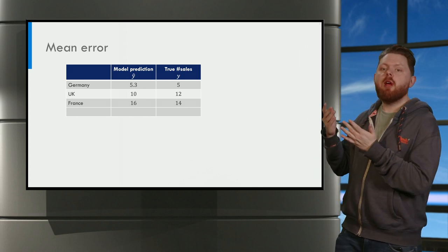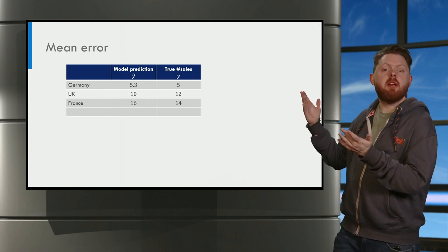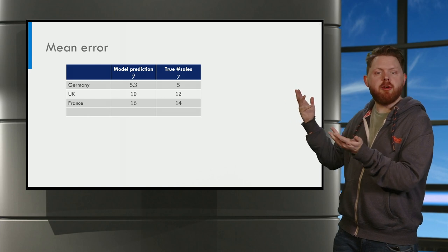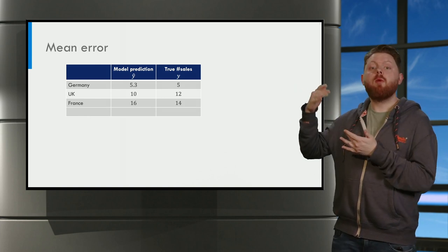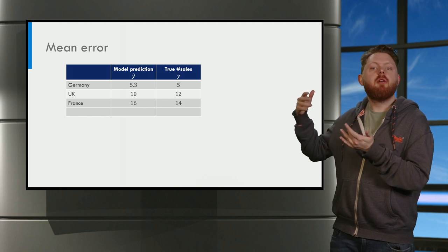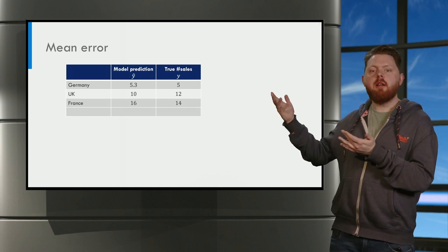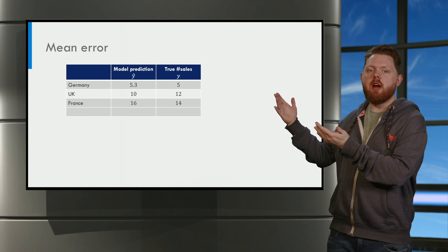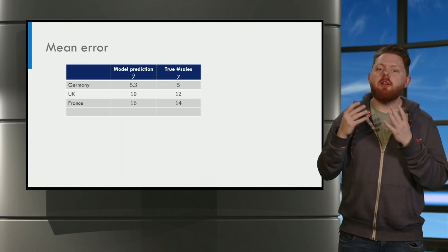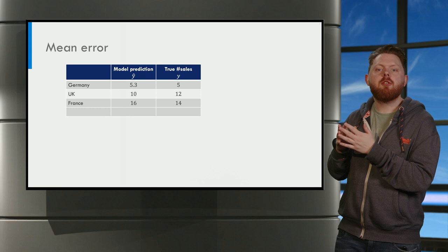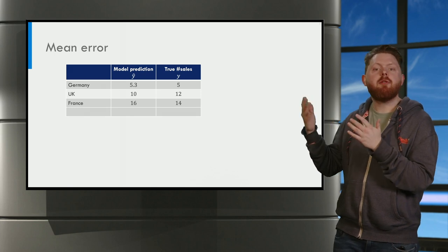Let's say that we have trained a regression model to predict, for instance, the number of sales. In the first column we have our model predictions: 5.3, 10, 16, etc. In the second column we have the true number of sales: 5, 12, and 14.